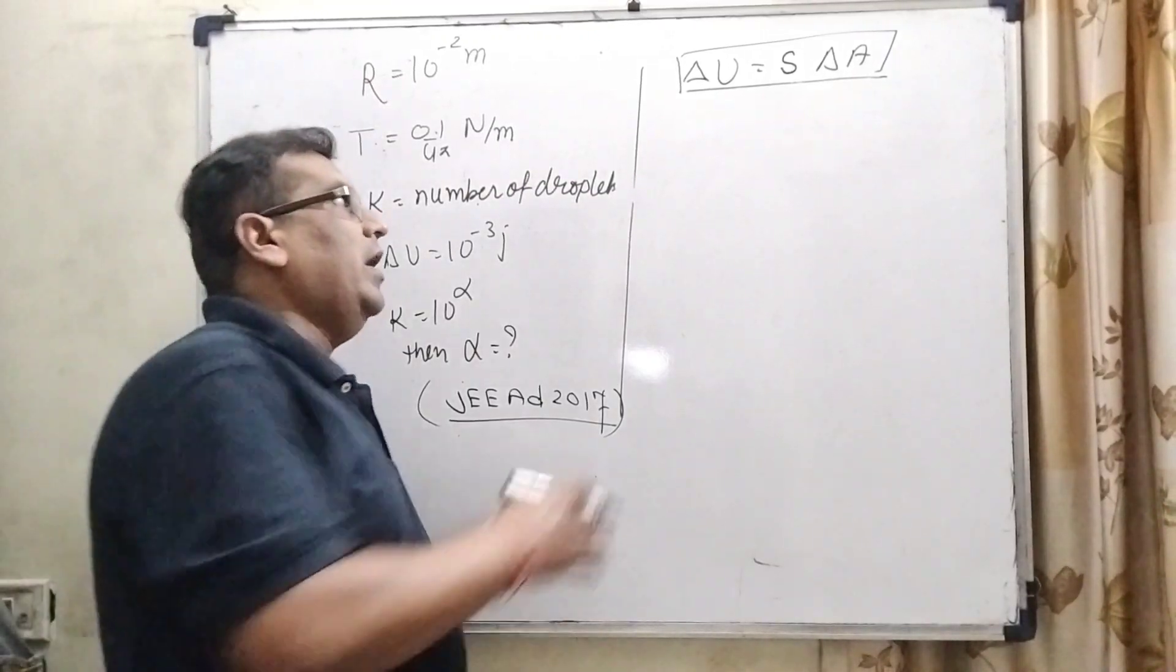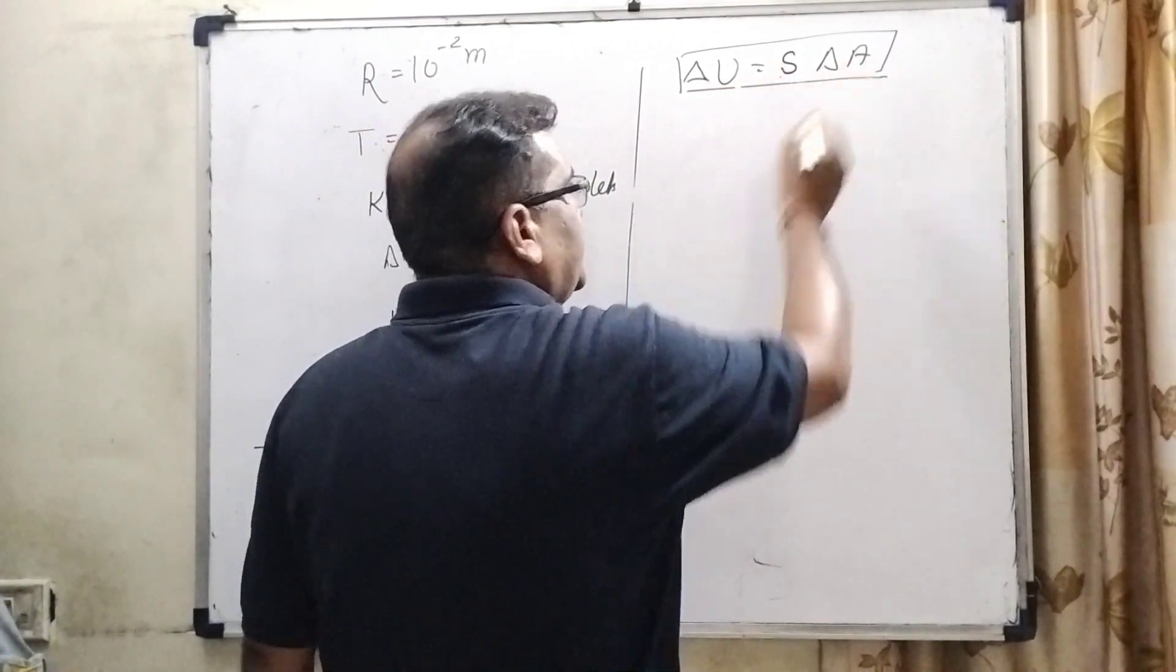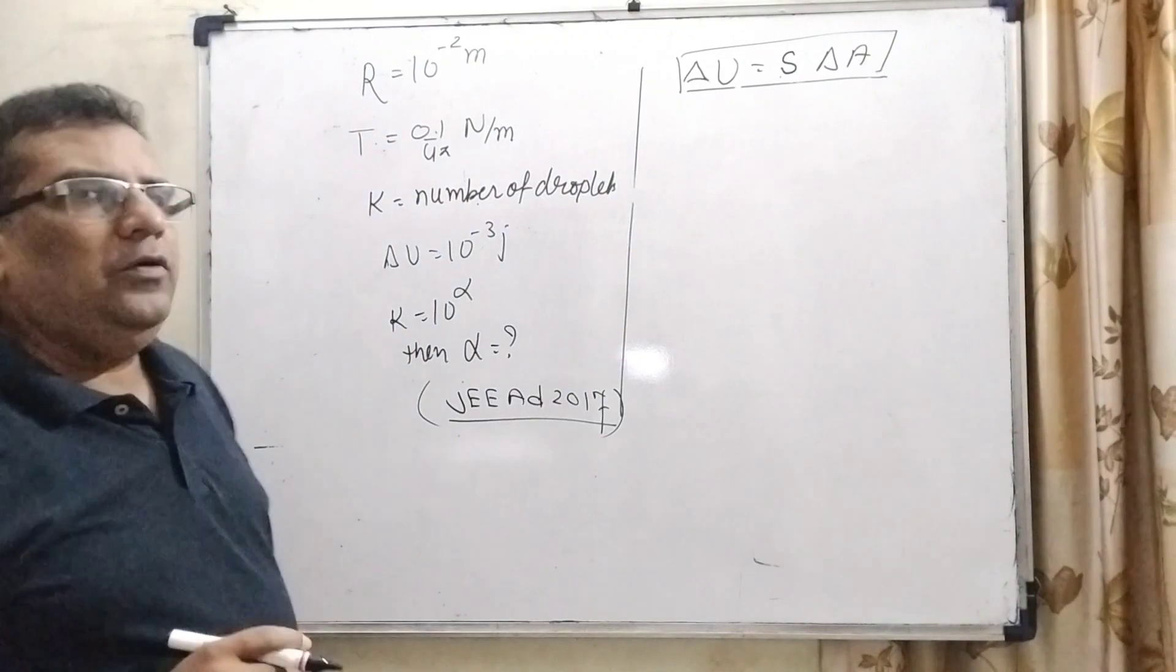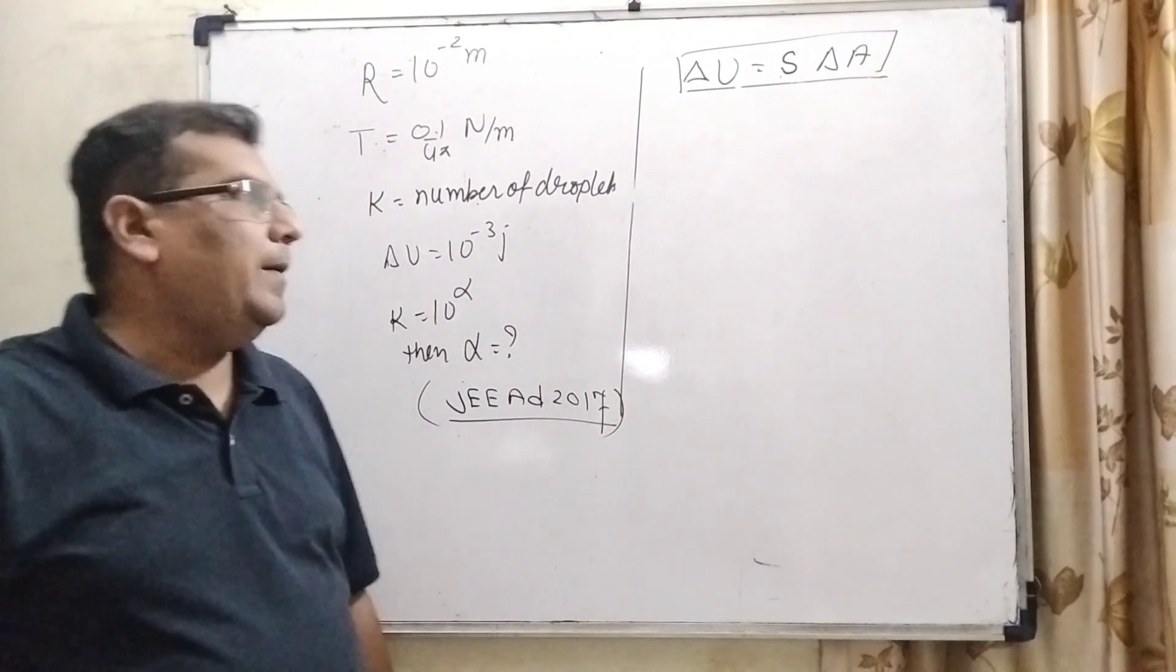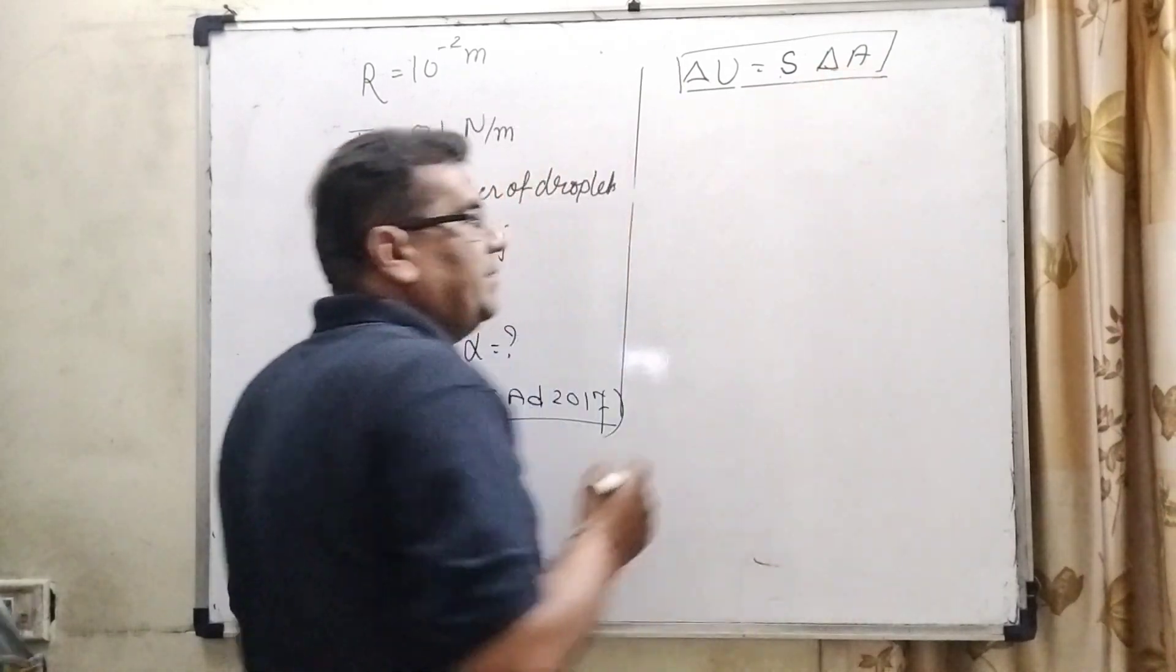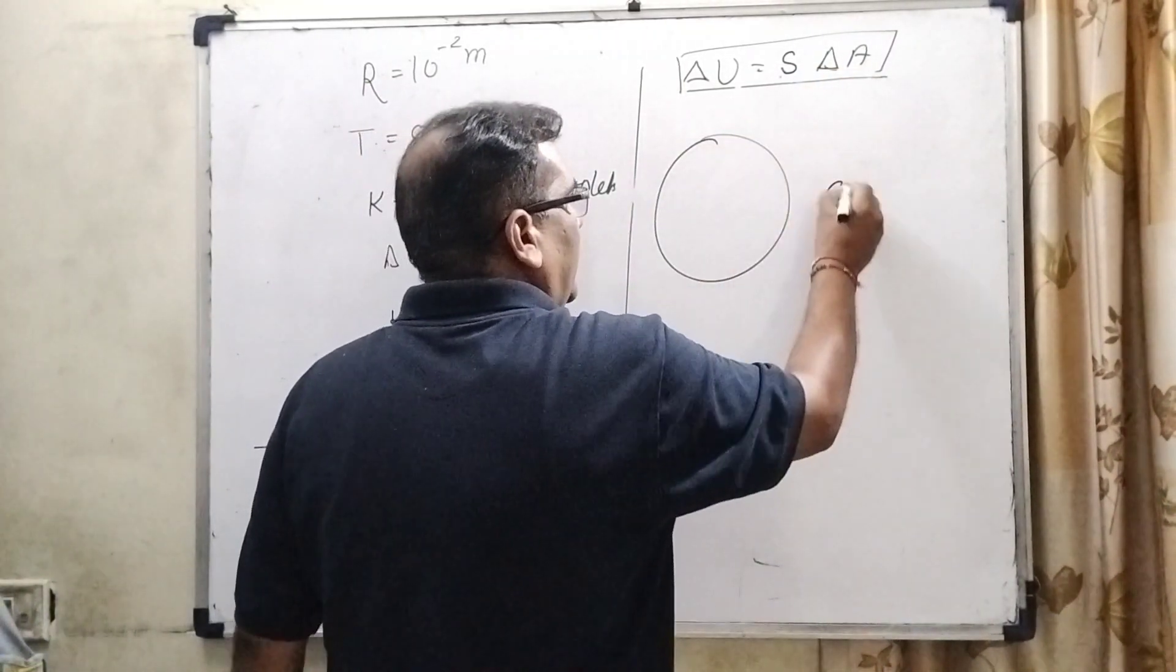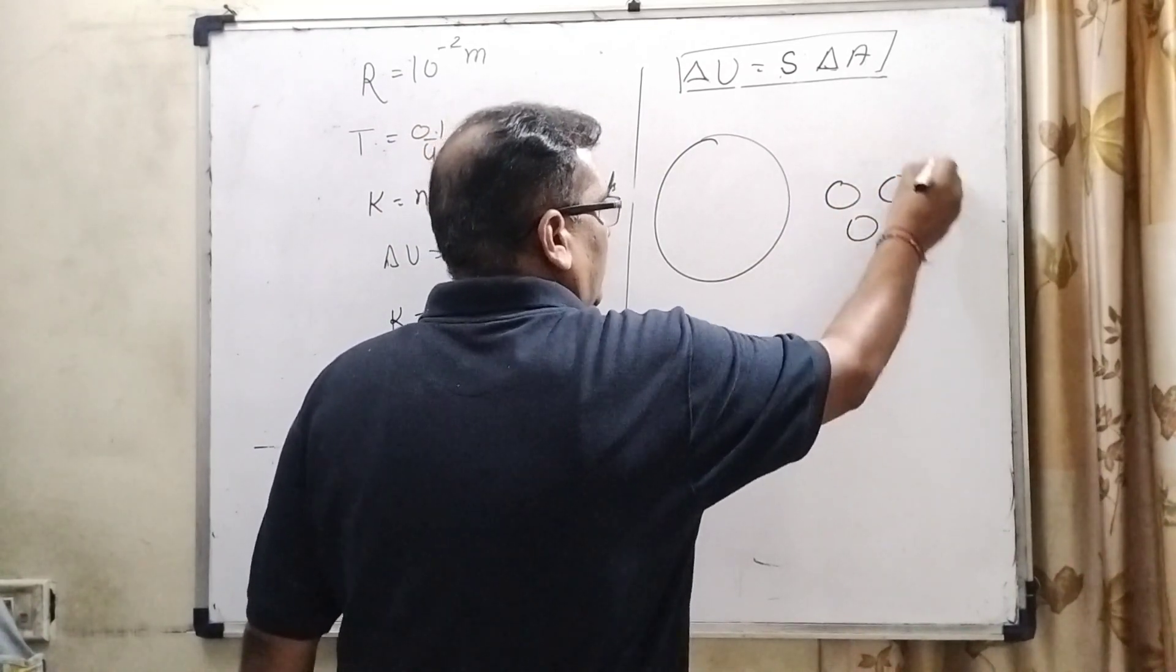To solve this question, we have required delta U change in energy equal to surface tension times change in area. So therefore, we have to find out the change in area. And before we have to find out the change in area, establish the relation between the big drop splitting in k small drops.